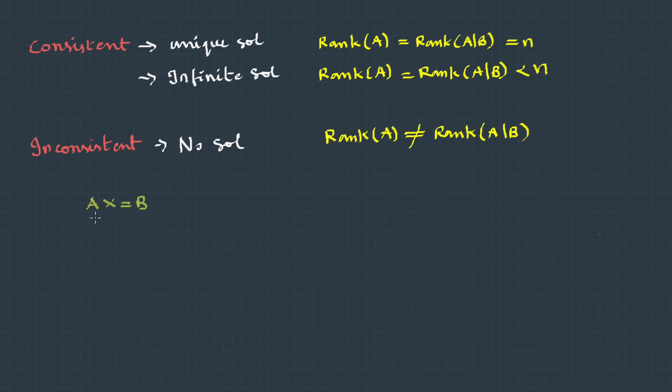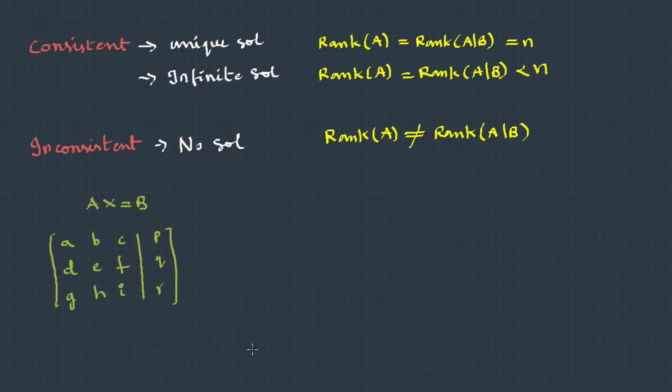Suppose we have a system of equations Ax = b. Usually it has three variables, so the augmented matrix looks something like this. For three variables there will be three rows.